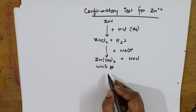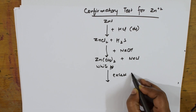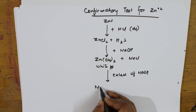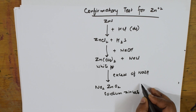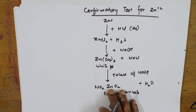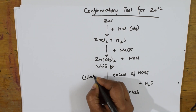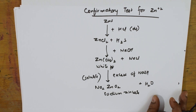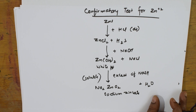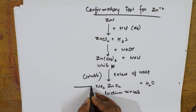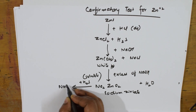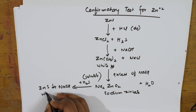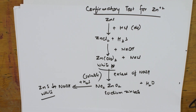To the same zinc hydroxide white precipitate, if you add excess sodium hydroxide, you get Na2ZnO2 — sodium zincate — and water. This precipitate is soluble in excess sodium hydroxide, which confirms zinc. You can also take sodium zincate and introduce H2S — you will get sodium hydroxide plus zinc sulphide, a white precipitate, which further confirms the presence of zinc.